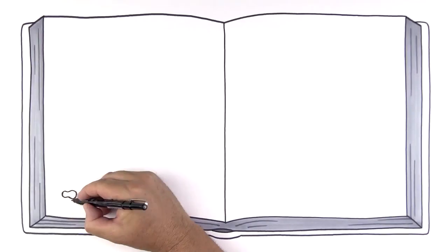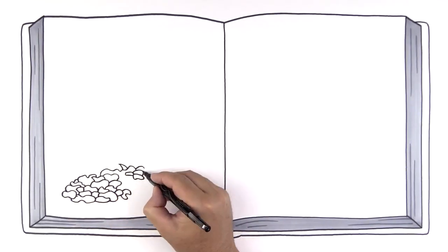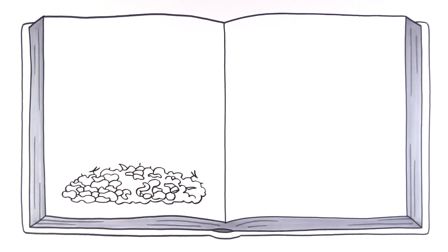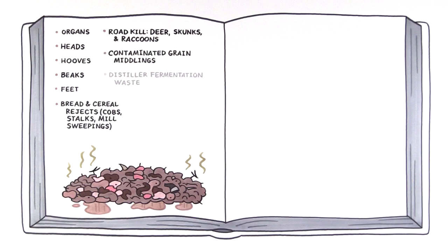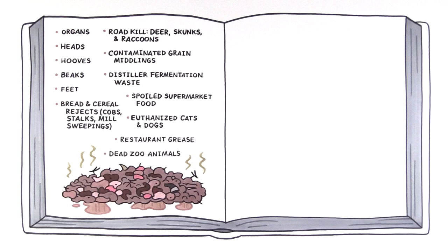This tale begins on the floor of a factory, piled high with raw product, everything from slaughterhouse organs, heads, hooves, beaks and feet, to diseased and disabled farm animals, even roadkill, restaurant grease and all the oozy stuff in between.